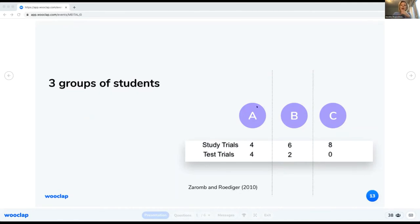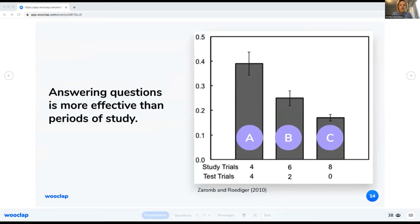In this study by Zaromb and Roediger in 2010, three groups of students were asked to prepare for a test using three different techniques. You see that group A had four study periods, and by study we really mean rereading and highlighting, etc. And they had four test trials. And by test we really mean mock exams or practice, the recovery of the material they studied.